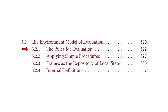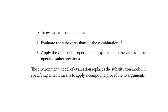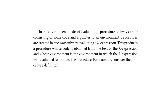This brings us to the first subsection: the rules for evaluation. The text states: to evaluate a combination we have two steps — one, evaluate the sub-expressions of the combination, and two, apply the value of the operator sub-expression to the values of the operand sub-expressions. This has been stated earlier in chapter 1. The environment model of evaluation replaces the substitution model in specifying what it means to apply a compound procedure to arguments. In the environment model, a procedure is always a pair consisting of some code and a pointer to an environment.